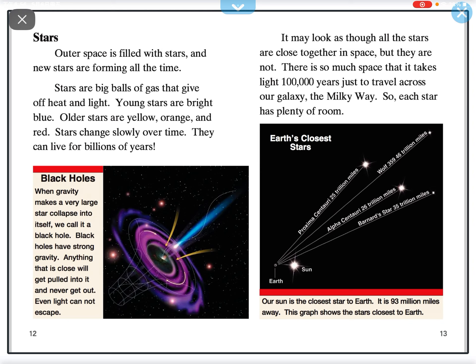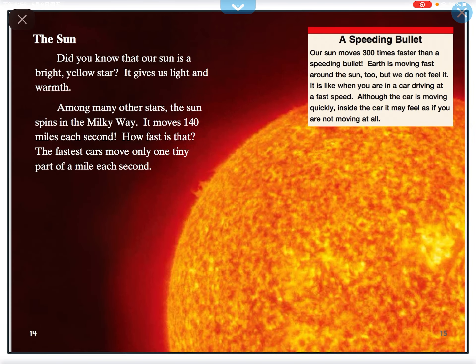It may look as though all the stars are close together in space, but they are not. There is so much space that it takes light 100,000 years just to travel across our galaxy, the Milky Way, so each star has plenty of room.